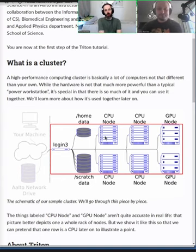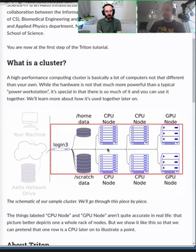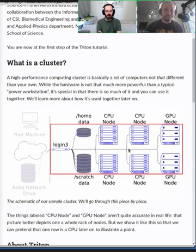I guess we shouldn't forget there's a hidden element in this picture, which is the network. So, we see all these lines connecting things, but that network is actually a pretty big deal also. It's very fast to move all this data around - both fast and low latency.